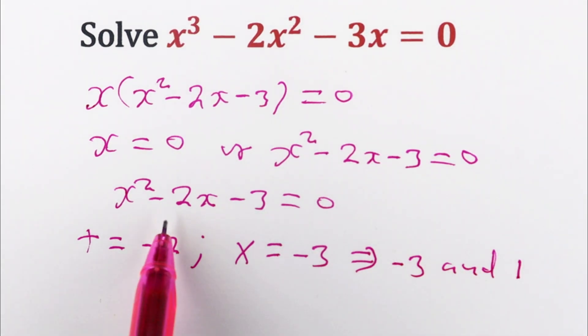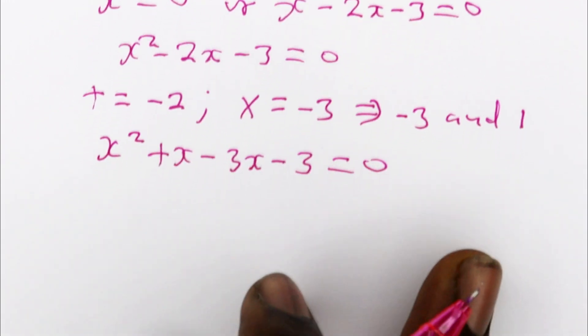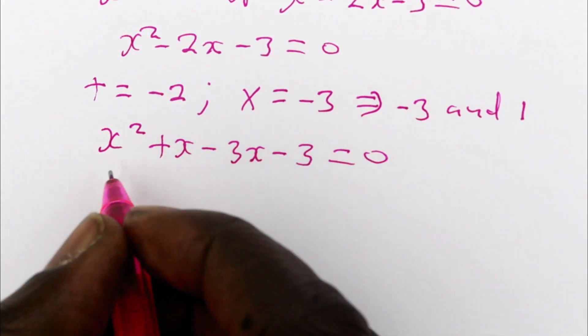So just split negative 2 into these two so that you have x squared plus x minus 3x minus 3 is equal to 0. So the common factor between these two is x.